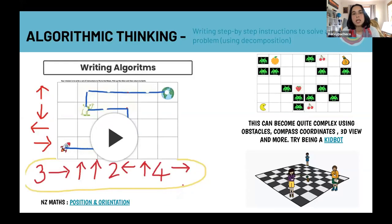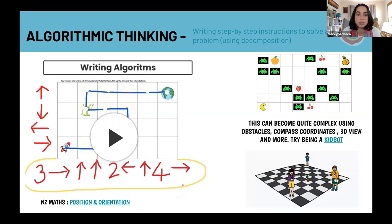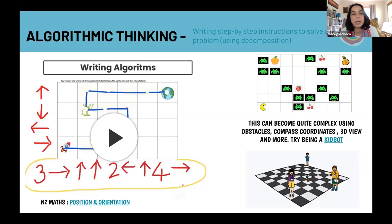Now let's get into algorithmic thinking in a more explicit way. Algorithmic thinking is about writing step-by-step instructions to solve a problem. The easiest way I've found to do this with students is to use a grid. We can place characters on a grid - I need to get my character from point A to point B, and I can use position and orientation in maths to do this, then write an algorithm based on the problem I need to solve. Here's a little video I made for students during lockdown on writing algorithms.